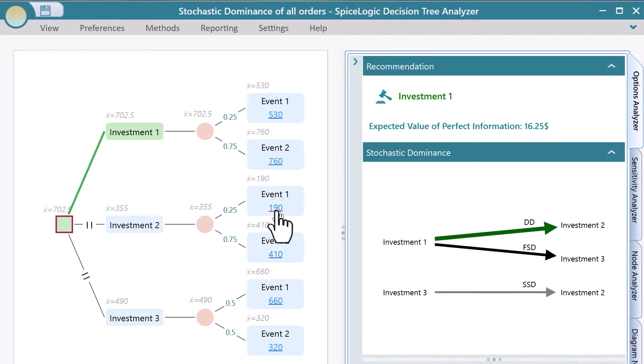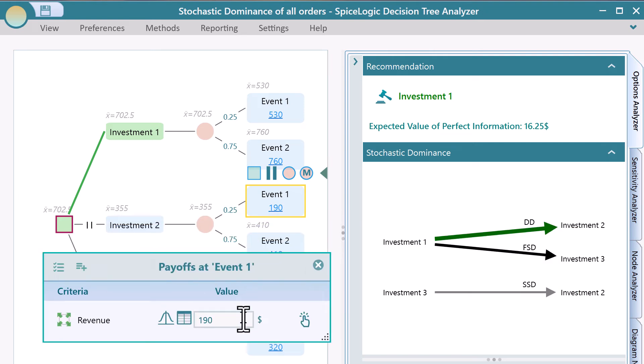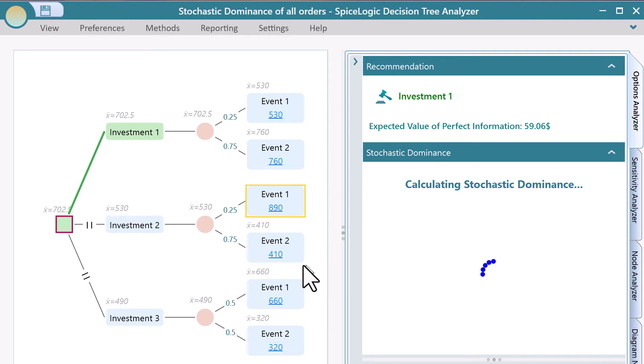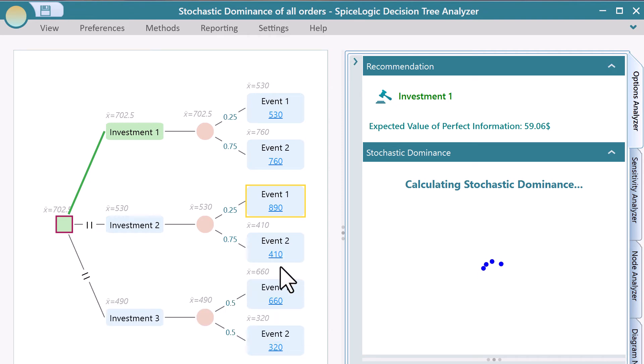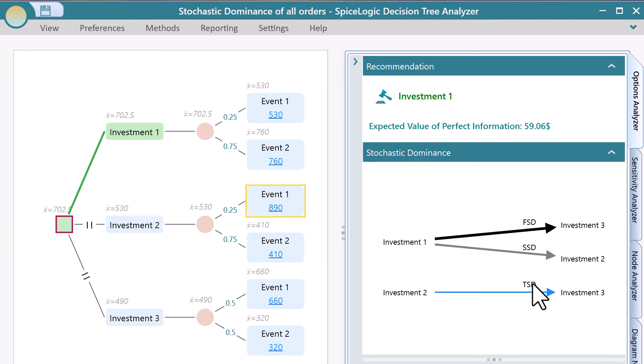The stochastic dominance is calculated only when the user expands the panel as it is a little bit of a time-consuming operation. In the stochastic dominance panel, you will see various notations.